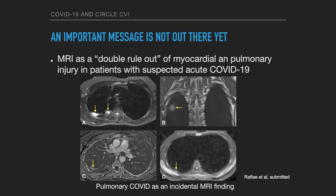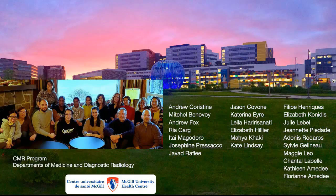In summary, cardiac MR in centers with access to an MR scanner may play a critically important role in the workup of COVID-19 patients showing signs of acute myocardial injury. Cardiac MR could also be combined with T2-weighted lung sequences to be used as a double rule-out. I hope many centers will open up that path for the benefit of patients. Thank you, stay safe, and let's now move into the Q&A session.